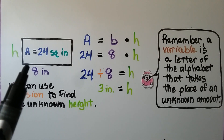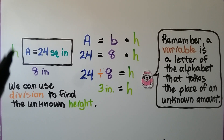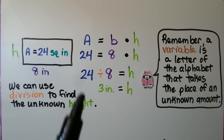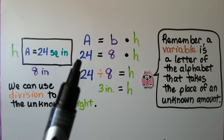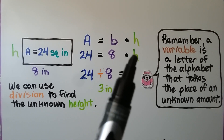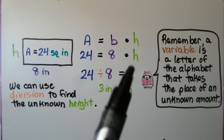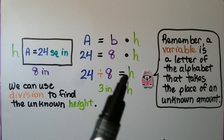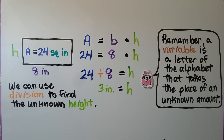For this rectangle, we're given that the area is 24 square inches and one side is 8 inches. We don't know the height. Using the formula: area equals base times height, we have 24 equals 8 times something. We think of division — 24 divided by 8 equals h, which is 3. Because it's in inches, our answer is 3 inches for the height. We can use division to find an unknown height.